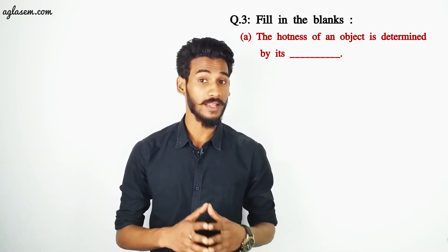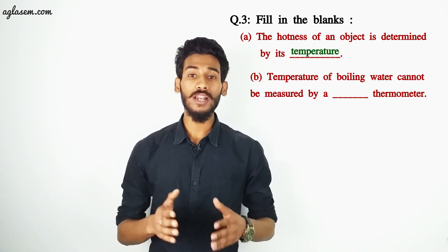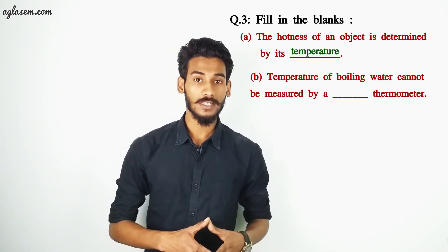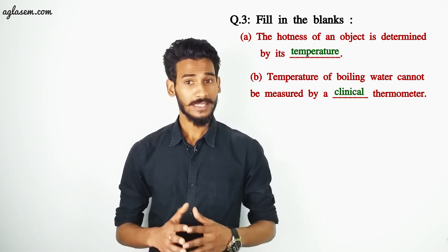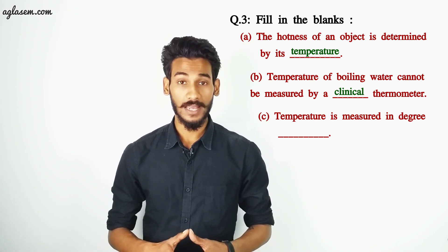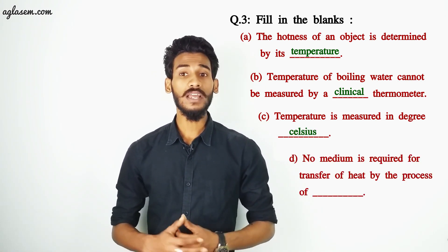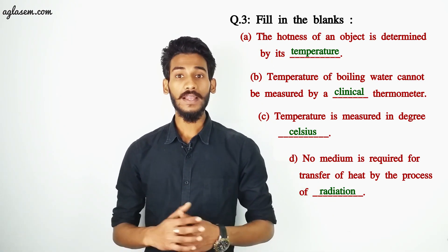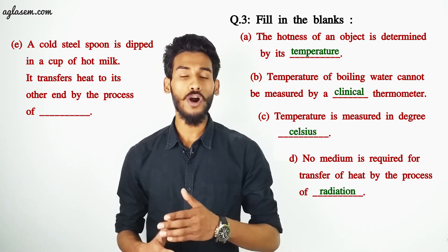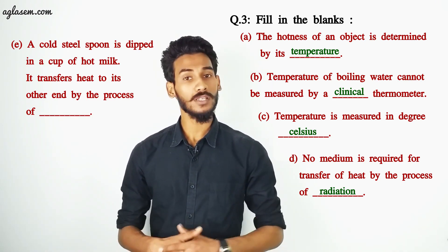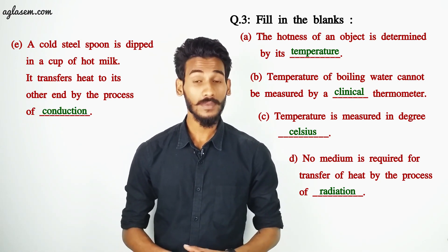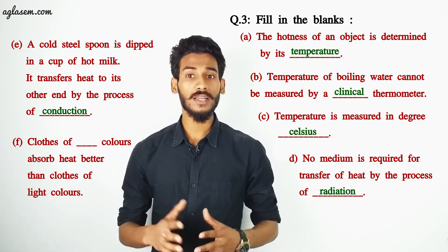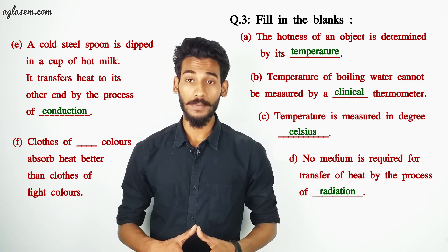Question number 3: fill in the blanks. A) The hotness of an object is determined by its — answer: temperature. B) Temperature of boiling water cannot be measured by a — thermometer; answer: clinical. C) Temperature is measured in degree — answer: Celsius. D) No medium is required for transfer of heat by the process of — answer: radiation. E) A cold steel spoon dipped in a cup of hot milk transfers heat to its other end by the process of — answer: conduction. F) Clothes of — colors absorb heat better than clothes of light colors; answer: dark.